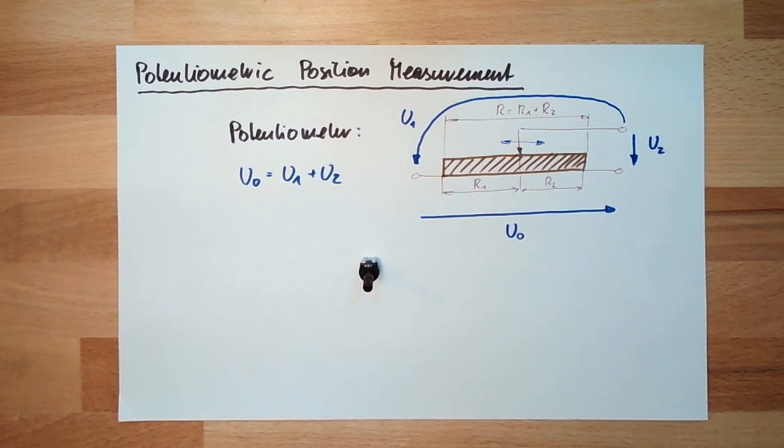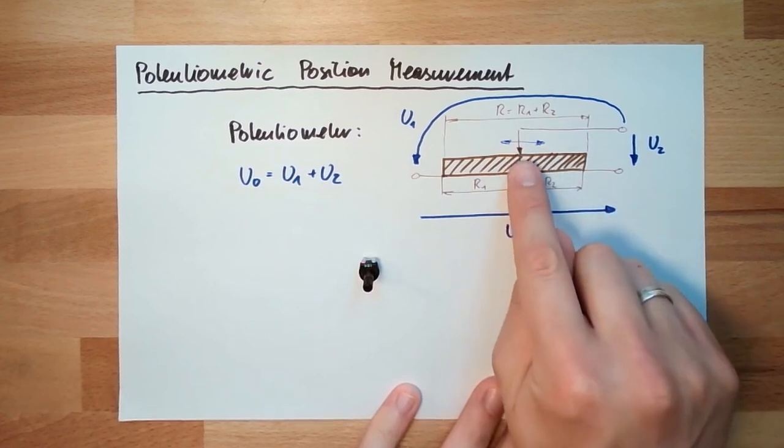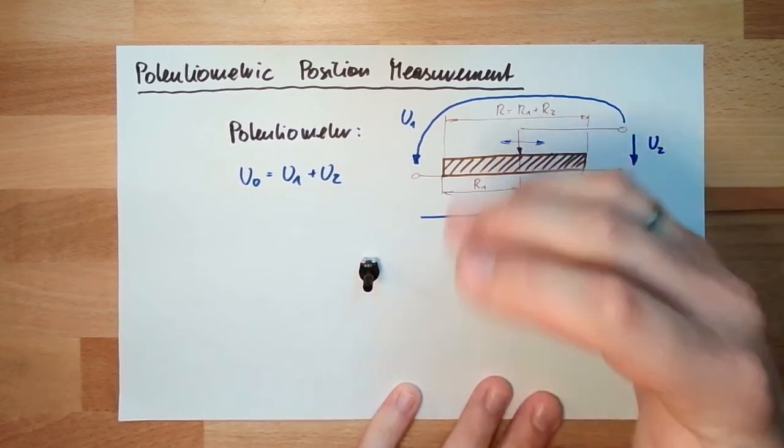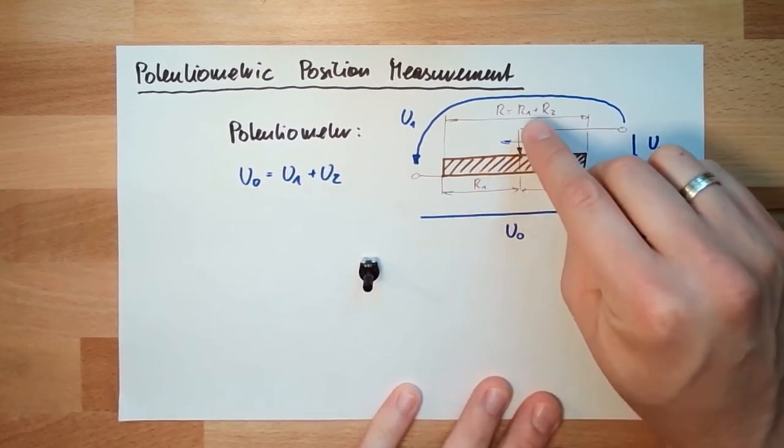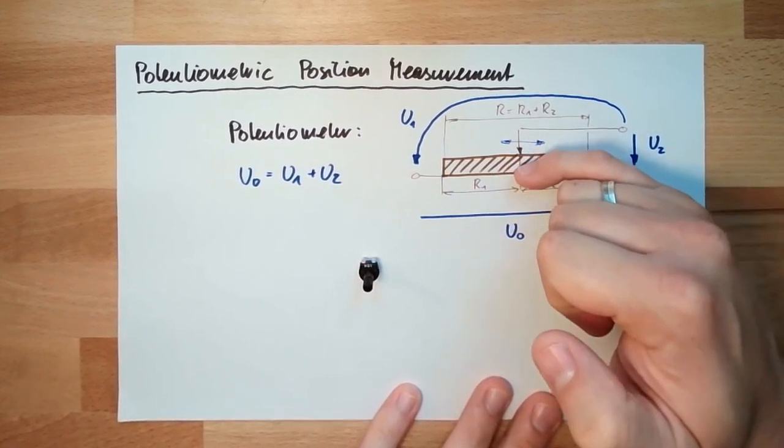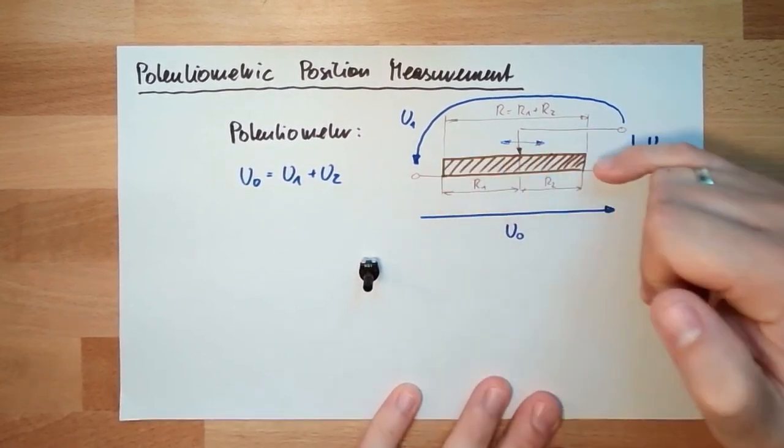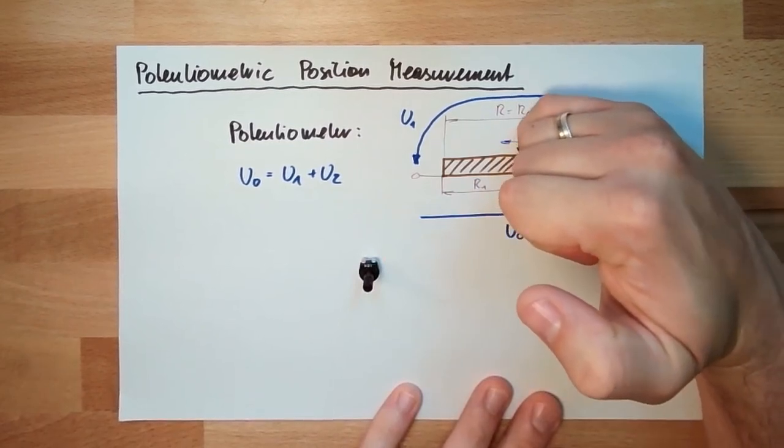There's one issue. If we're always measuring around a certain position, there might be some issues. One issue is maybe corrosion, or higher contact resistance between the moving contact and the real resistor.